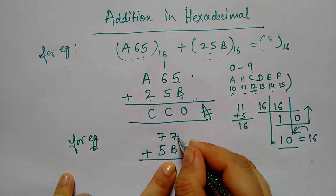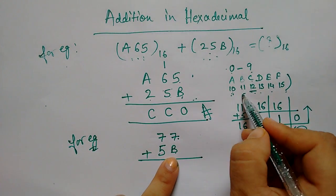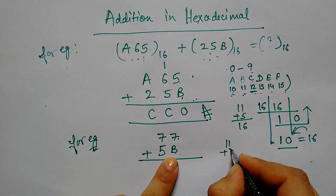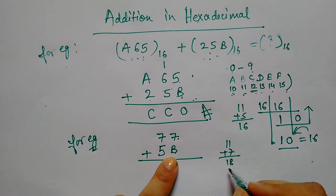Now, B plus 7. B is 11. 11 plus 7. How many? 18.